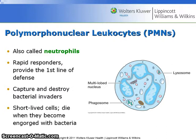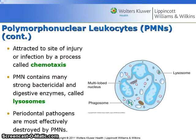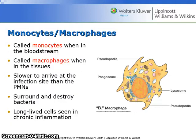Polymorphonuclear leukocytes are the first line of defense against invasion by foreign organisms; they capture and destroy bacterial invaders. These cells are short-lived and they die when they become engorged with bacteria. They are attracted to the site of injury or infection by a process called chemotaxis. PMNs contain many strong bactericidal and digestive enzymes called lysosomes. Periodontal pathogens are most effectively destroyed by PMNs.